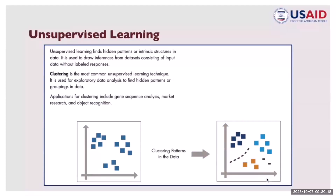Let's now proceed to unsupervised learning. While supervised learning classifies output labels from a known data set, unsupervised learning tries to find hidden patterns or intrinsic structures in data. It is used to draw inferences from data sets consisting of input data without labeled responses. A good example is clustering, which is used for exploratory data analysis to find hidden patterns or groupings in data. Applications include gene sequencing analysis, market research, and object detection.